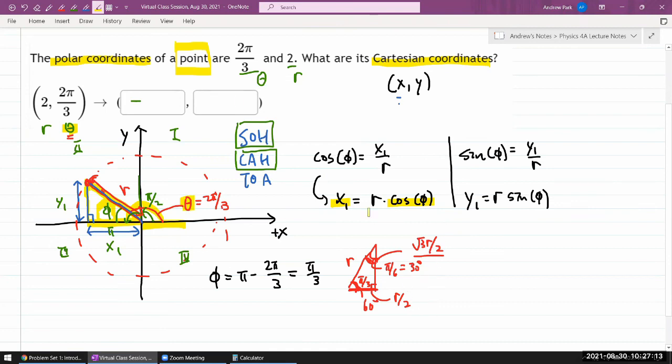So adjacent, yeah, so x component is going to be 1, 2 divided by 2, and the y component is going to be 1.73.